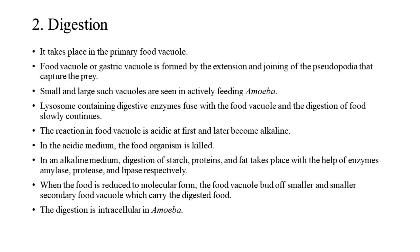Digestion takes place in the primary food vacuole. Food vacuoles (or gastric vacuoles) are formed by the extension and joining of pseudopodia that capture the prey. Small and large vacuoles are seen in actively feeding amoeba. Lysosomes containing digestive enzymes fuse with the food vacuole and digestion of food slowly continues. The reaction in the food vacuole is acidic at first and later becomes alkaline. In the acidic medium, the food organism is killed.